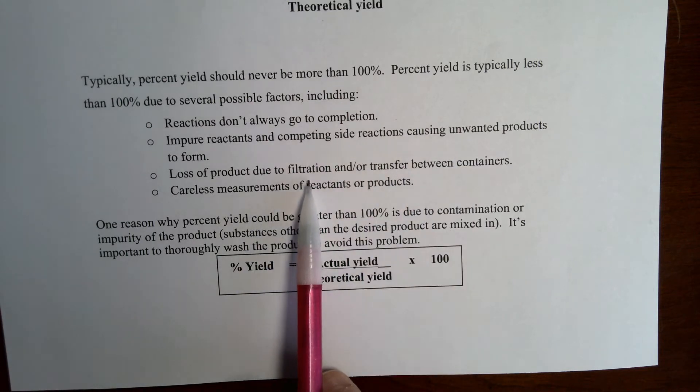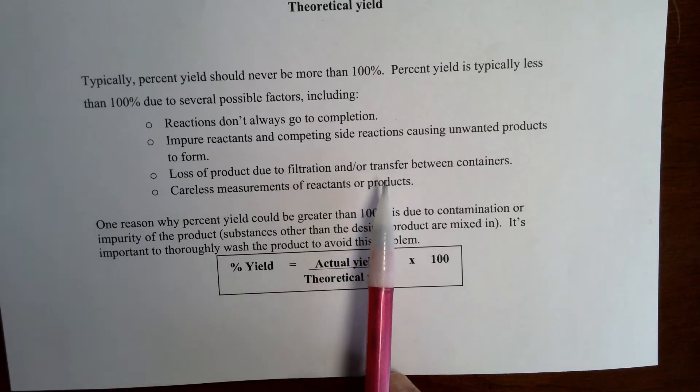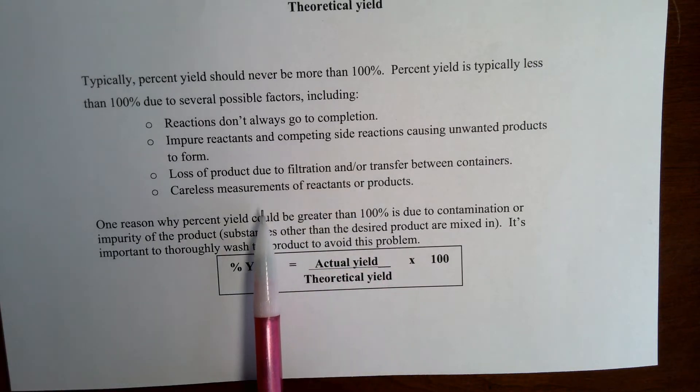When you're filtering, sometimes you lose product due to transferring or through the filtration process, where maybe the filter paper doesn't catch it all, or you don't get all the product onto the filter paper, or some is left behind in the original container. Or perhaps there are careless measurements of reactants or products.